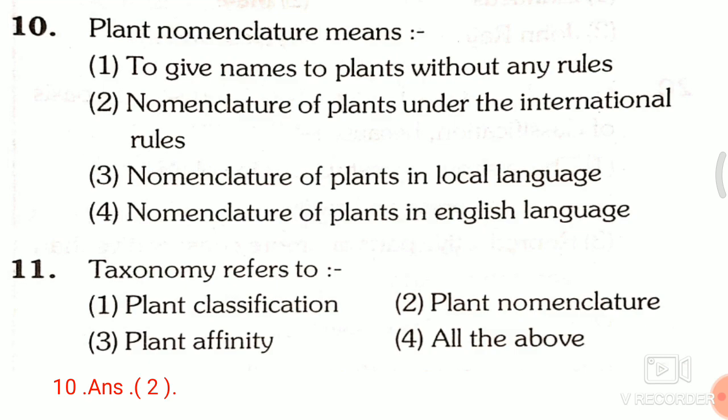Question 11: Taxonomy refers to — first, plant classification; second, plant nomenclature; third, plant affinity; fourth, all of the above. The answer is all of the above — plant classification, plant nomenclature, and plant affinity all refer to taxonomy.